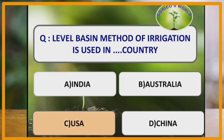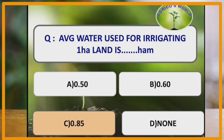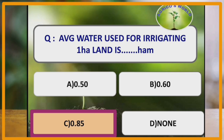Level basin method of irrigation is used in USA. Negative water potential: matric and capillary water potentials are the negative water potentials. Average water used for irrigating 1 hectare of land is 0.85 hectare metres.